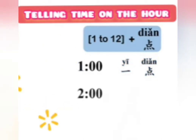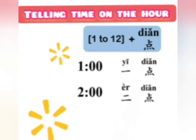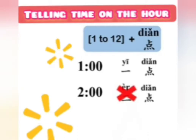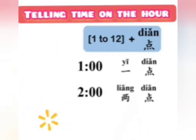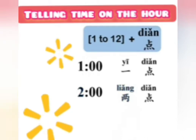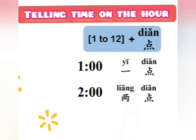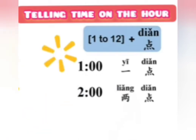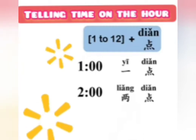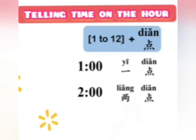For 2 o'clock, you might think it's 二点, but this one is an exception. Two o'clock is not 二点; instead it's 两点. Chinese has two different ways of saying the number two: 二, which you already know, and 两. 二 is used when counting, doing math, and saying a sequence of numbers like a phone number — it's not usually used with measure words. 两 is used with measure words. We'll talk about measure words more in another lesson.